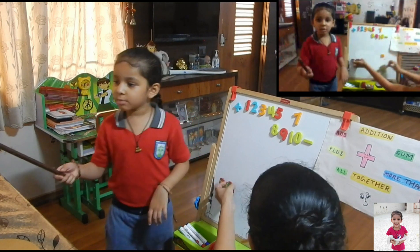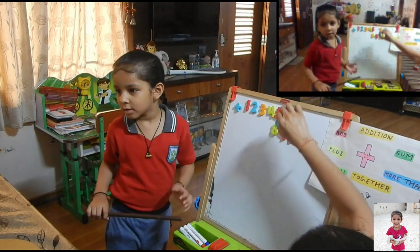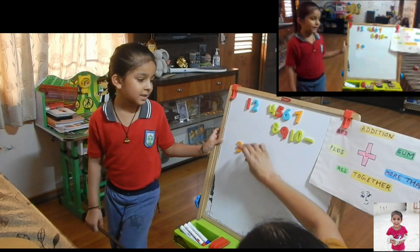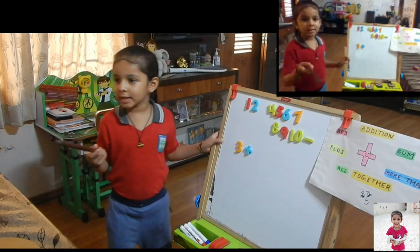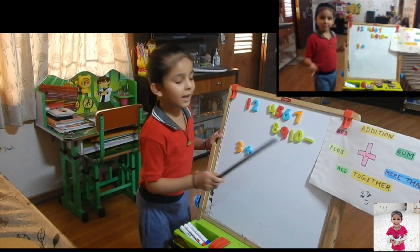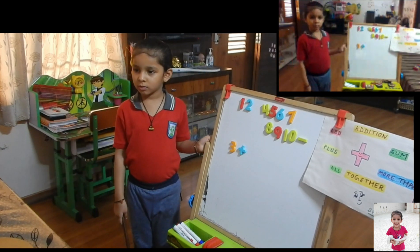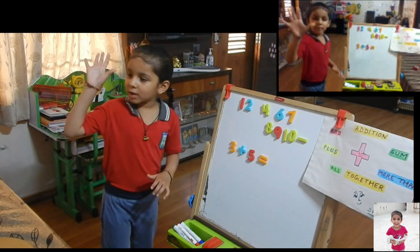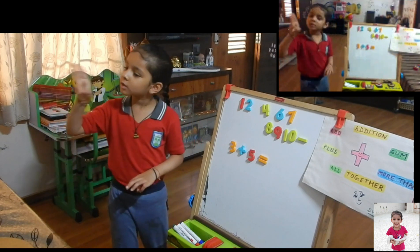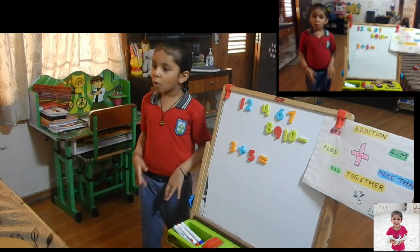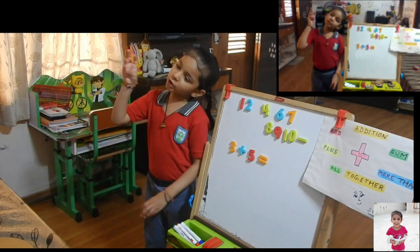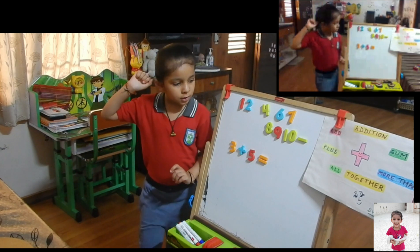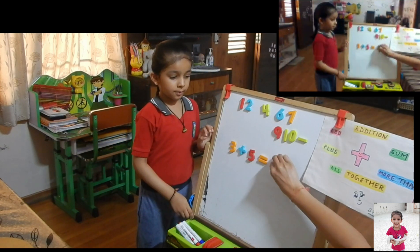I'll ask for a number from one to ten. Three. Okay, then I'll put a plus sign. Give me another number from one to ten. Five. Okay, then I'll put a plus sign. We keep five in our mind and three on our fingers, then count forward from one until our three fingers are closed: six, seven, eight. So eight is the answer.